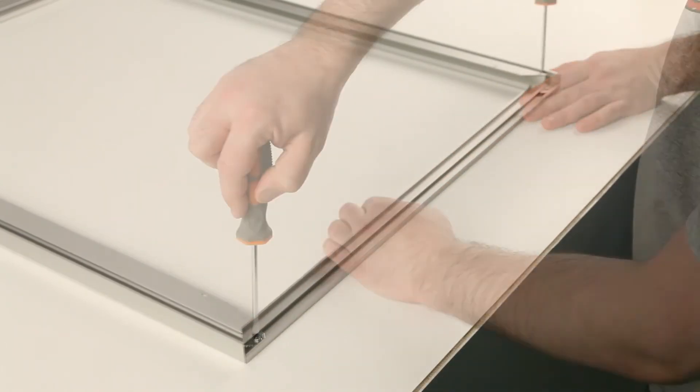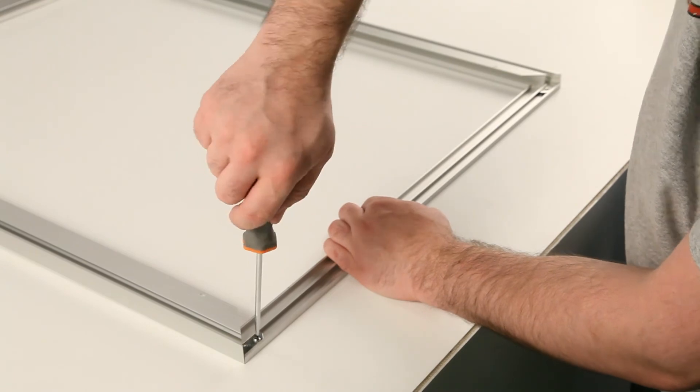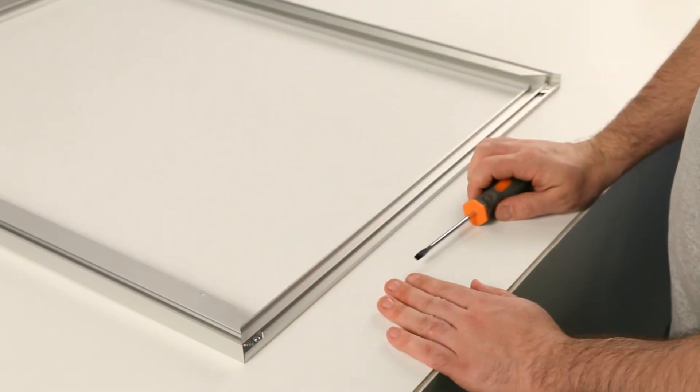Remember not to over tighten the thin rail angle screws, as this may create a visible dimple in the corners of the thin frame rail.